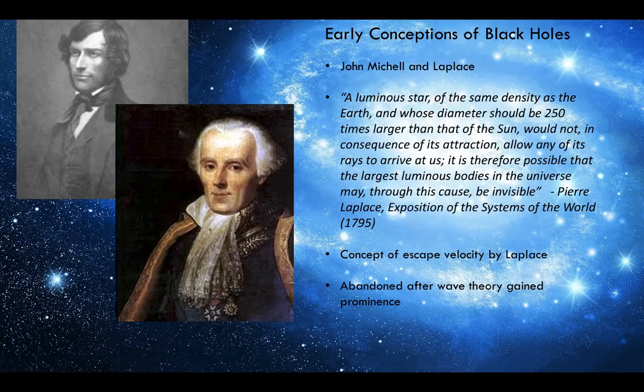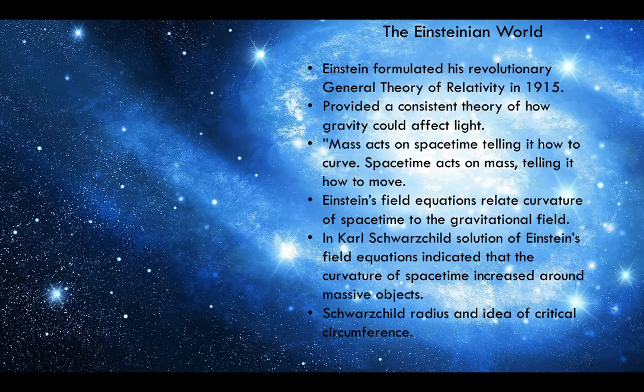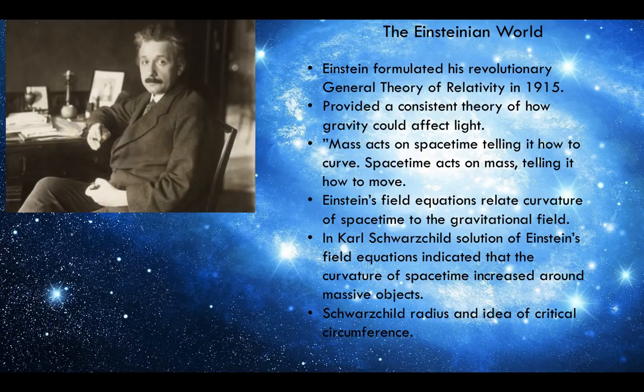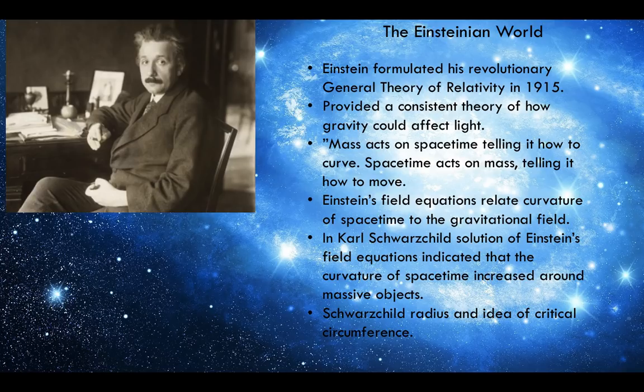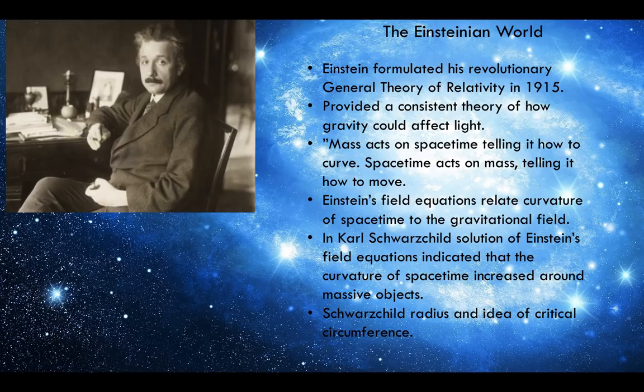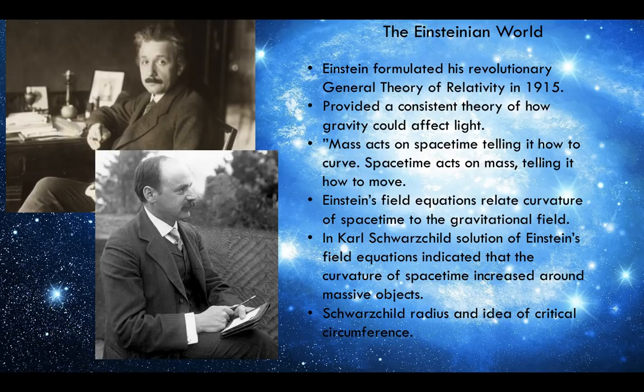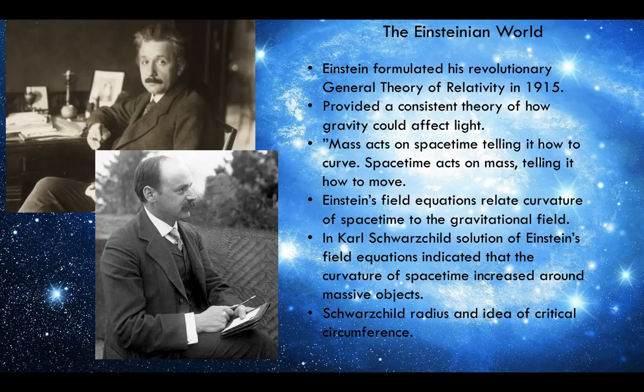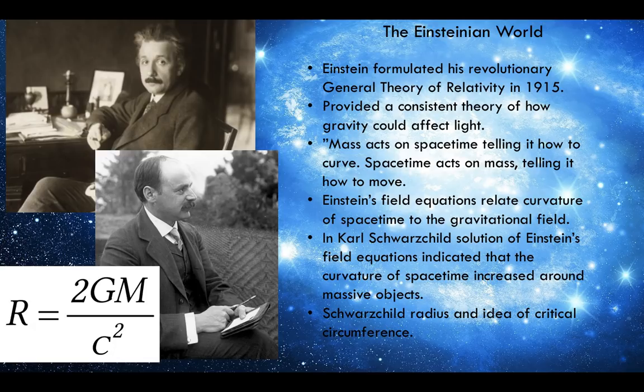It wasn't until the 1950s when Einstein formulated his revolutionary general relativity that we finally had a consistent theory of how gravity could affect light. He famously proclaimed that mass acts on space-time telling it how to curve, and space-time acts on mass telling it how to move. Einstein also formulated his field equations which relate the curvature of space-time to the gravitational field. Shortly afterwards, Karl Schwarzschild formulated his solution to Einstein's field equations and indicated that the curvature of space-time increased around massive objects. He formulated the concept of Schwarzschild radius, which is the radius that if you compress all the matter down to, the object would become a black hole.